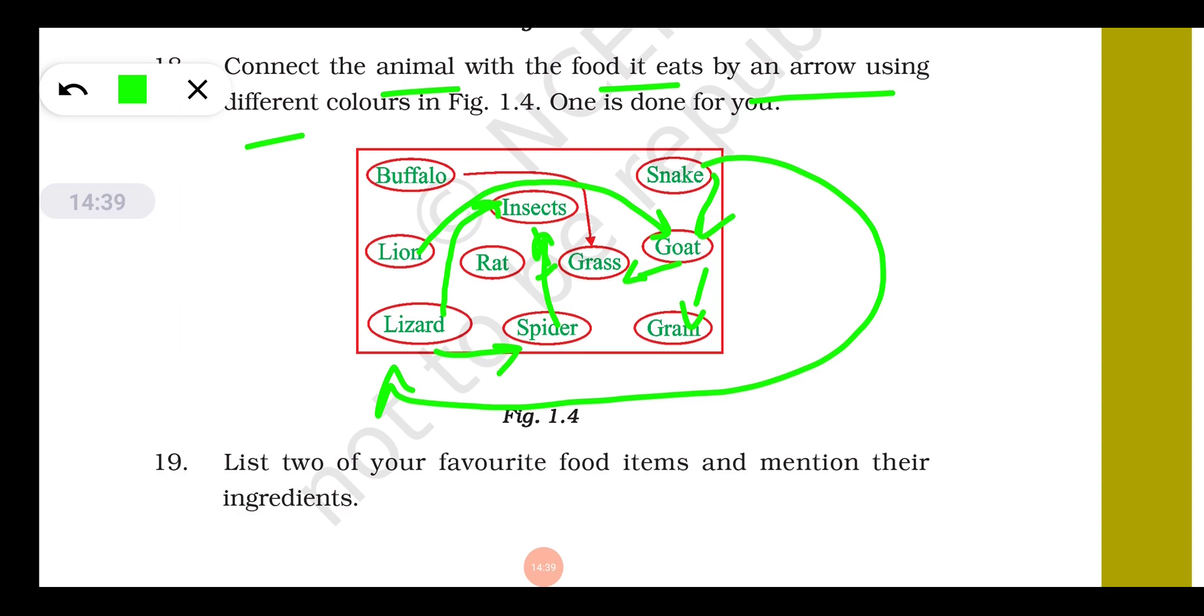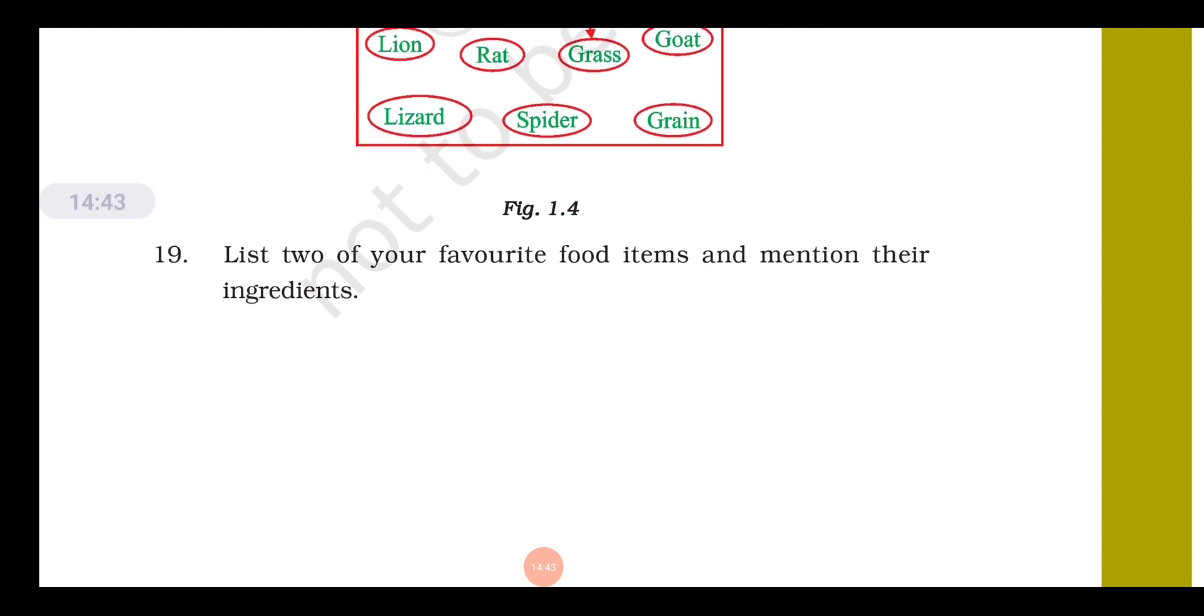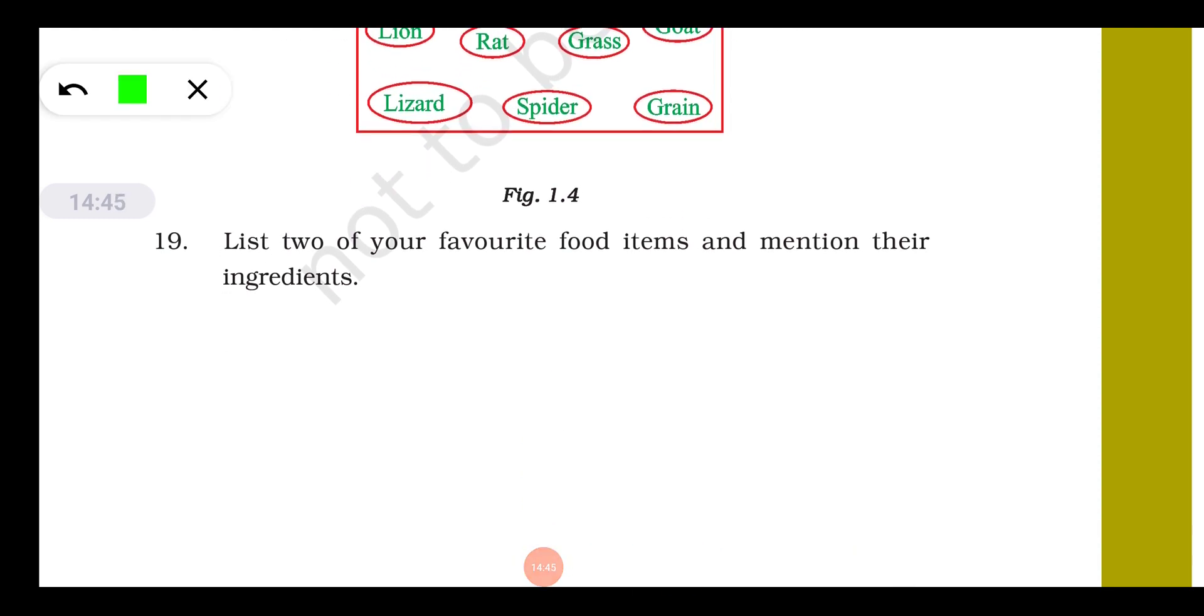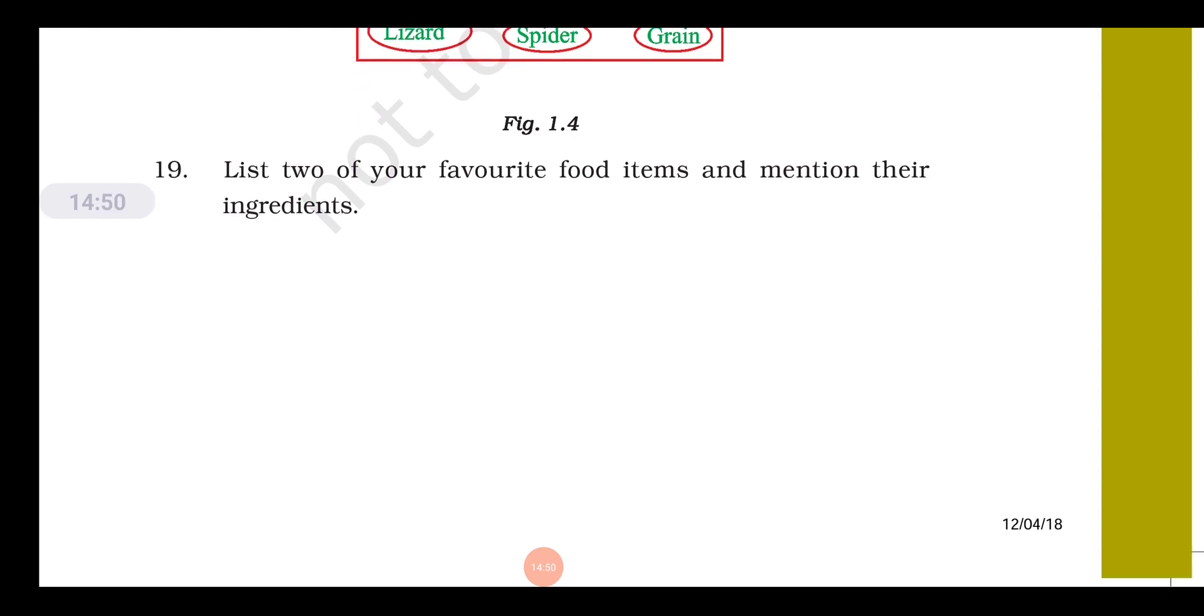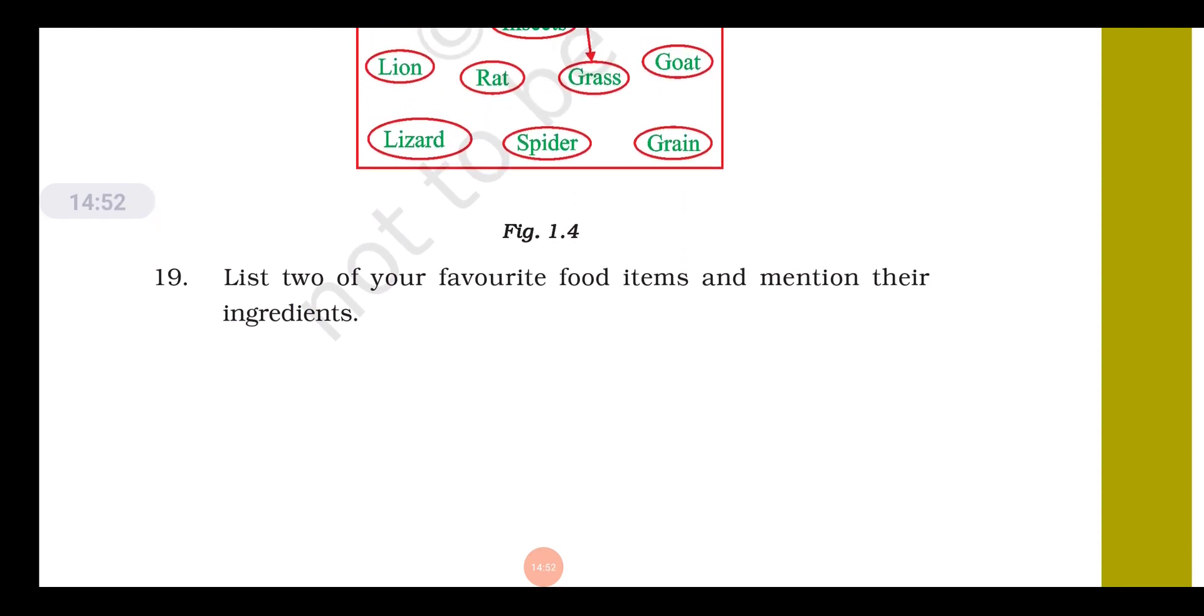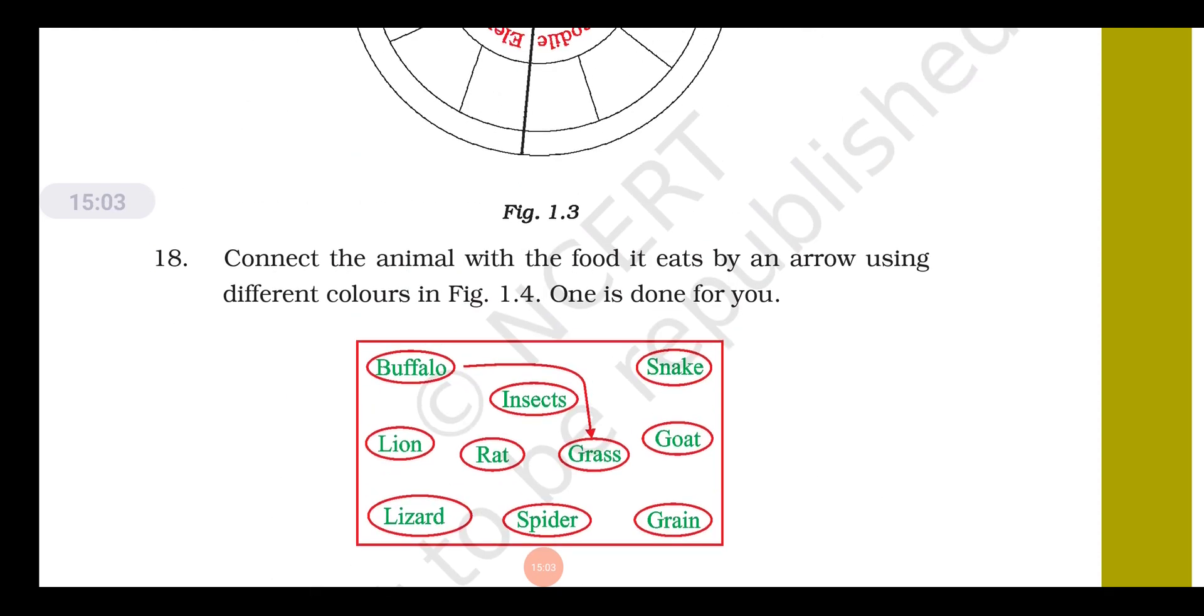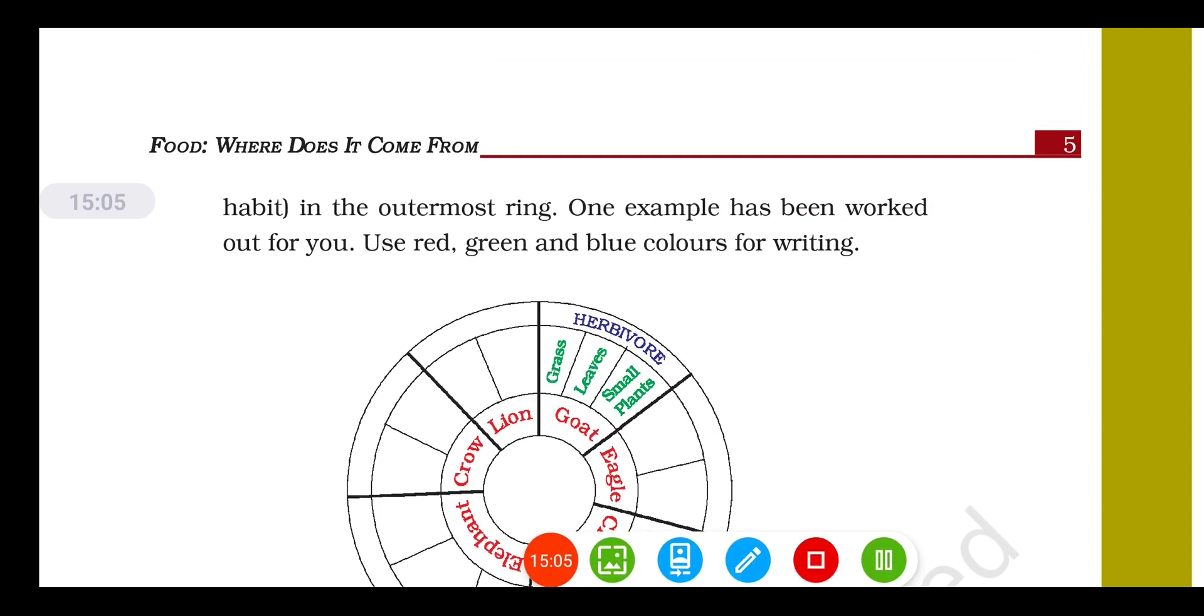Question number nineteen: list two of your favorite food items and mention their ingredients. This you have to answer because I don't know what is your favorite food. With this our video comes to an end. Till I develop more videos for you, please stay connected, stay fit, stay fine. Very best of studies. If you like my video, you can like, subscribe and share it with your friends. Thank you, bye.